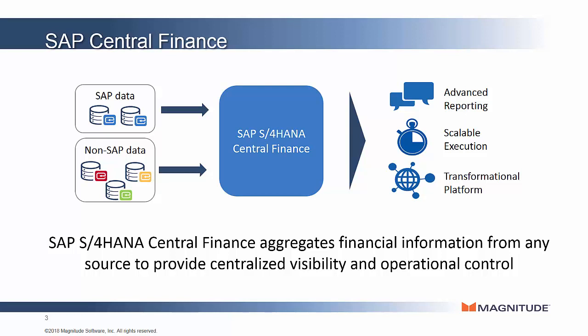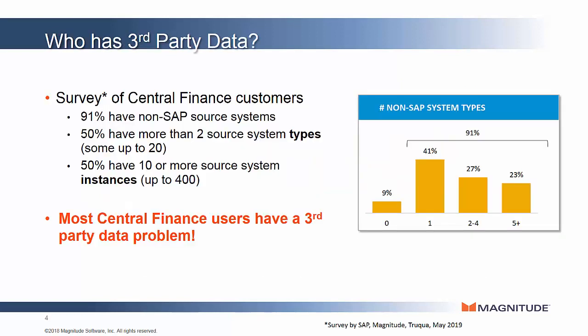However, there is a gap in this solution that must not be overlooked. In a recent survey of SAP Central Finance customers, the reliance on third-party data was made clear. It was determined that 91% of existing customers and prospects for SAP Central Finance have non-SAP data sources. 50% of those customers have more than two source system types or platforms, and one reported up to 20. And 50% have 10 or more source system instances, and in one case they reported 400 individual instances. Nearly all central finance users must deal with third-party data as part of their implementation, and for many, this would be a problem if they have not thought through how to manage it.